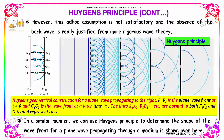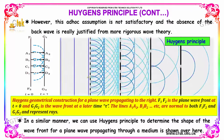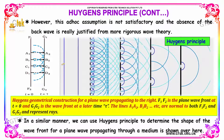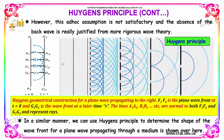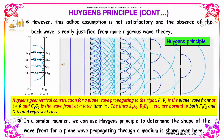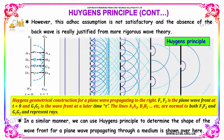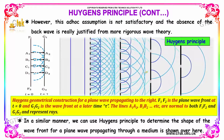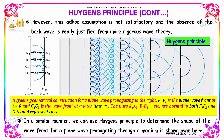Huygens' geometrical construction for a plane wave propagating to the right: F1 and F2 represent the plane wavefront at time t equal to 0, and G1, G2 is the wavefront at the later time tau. The lines A1, A2, B1, B2 and so on are normal to both F1, F2 and G1, G2, and they represent the rays. Similarly, we can use Huygens' Principle to determine the shape of the wavefront for a plane wave propagating through a medium.